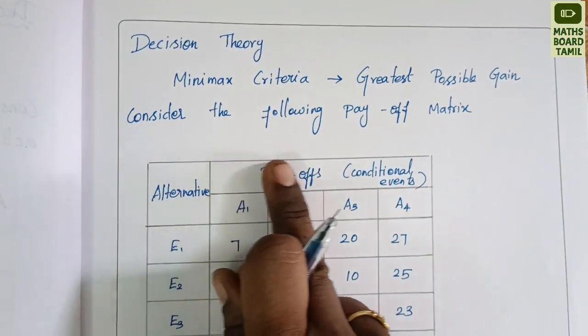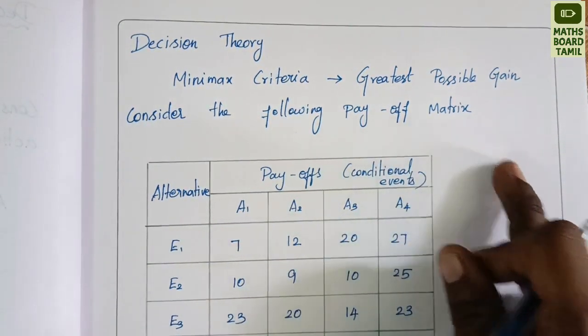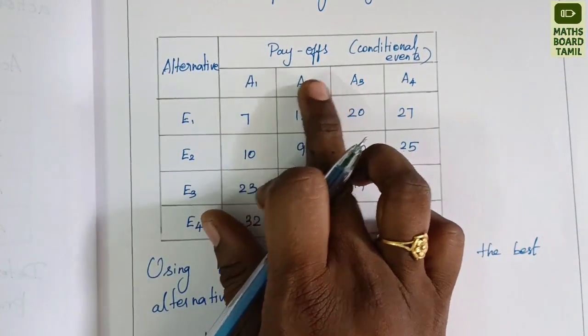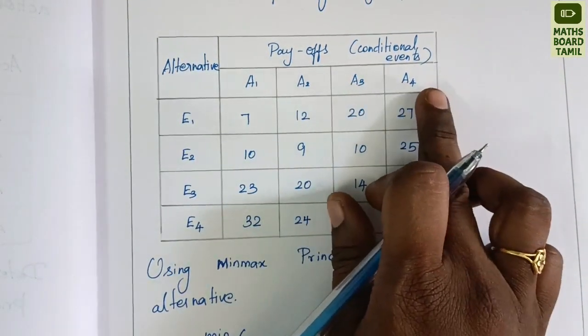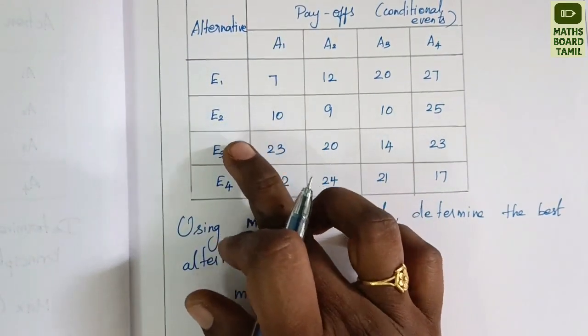Consider the following payoff matrix with alternatives E1, E2, E3, E4 and payoffs A1, A2, A3, A4.